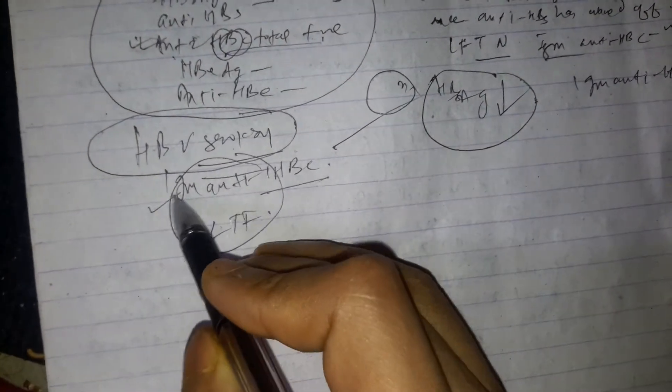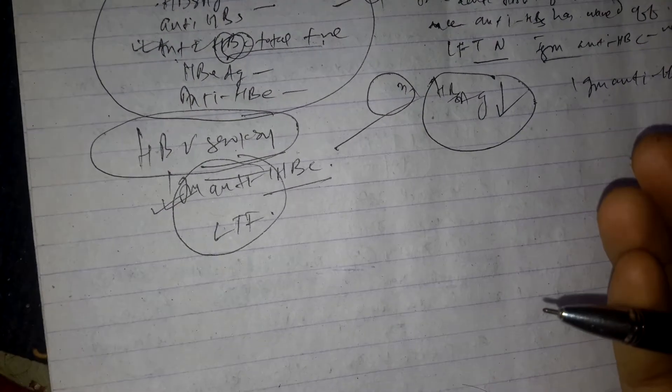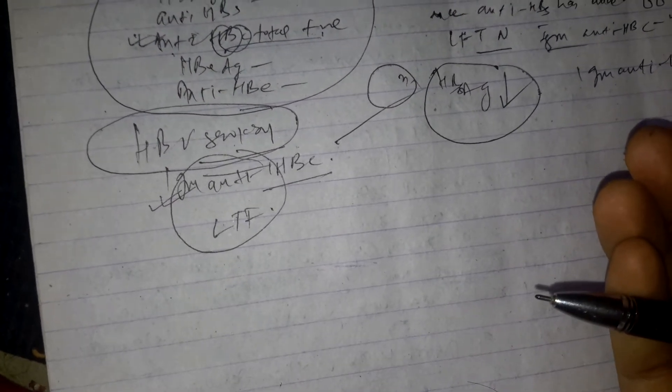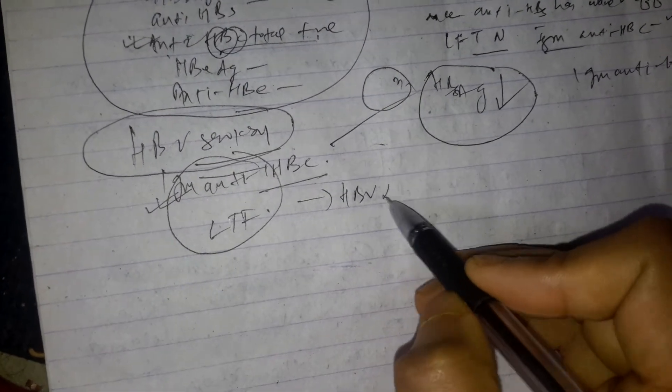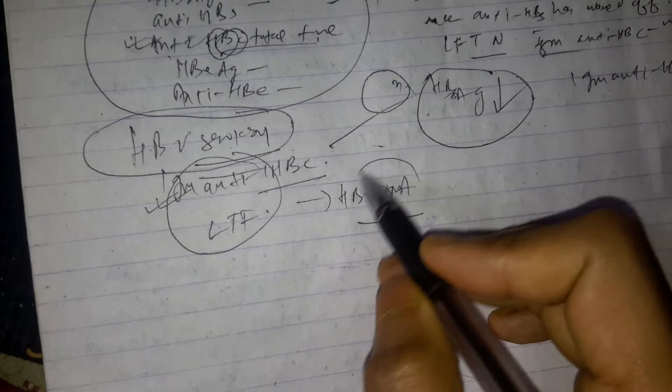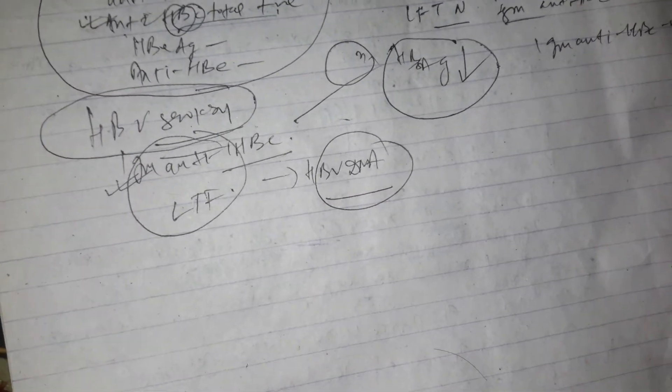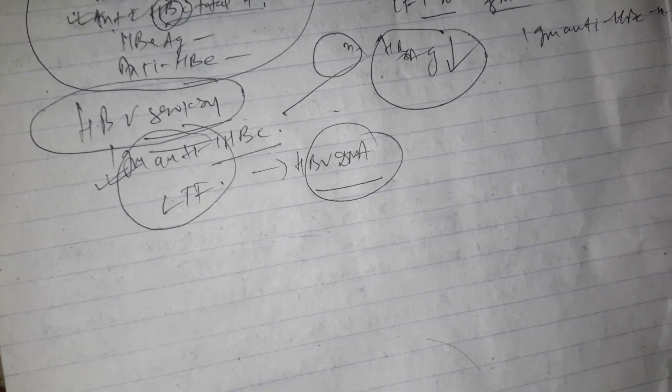And if liver enzymes are abnormal with negative IgM anti-HBc, or if there is evidence of chronic liver disease, then HBV DNA should be obtained to evaluate for chronic hepatitis B virus infection.